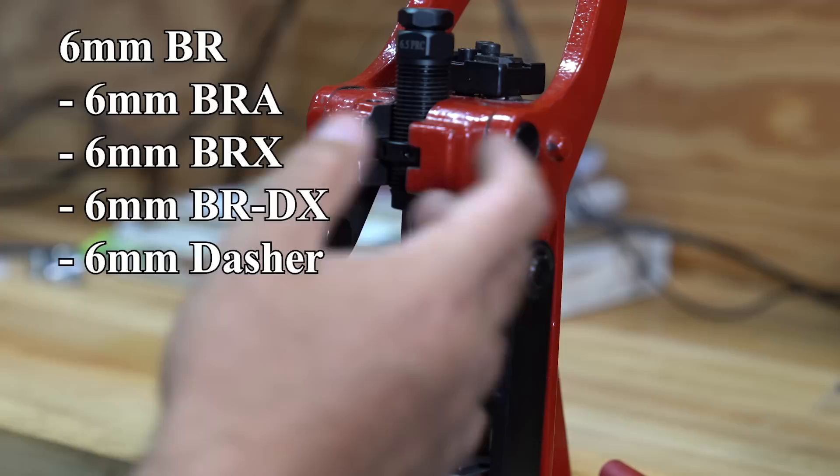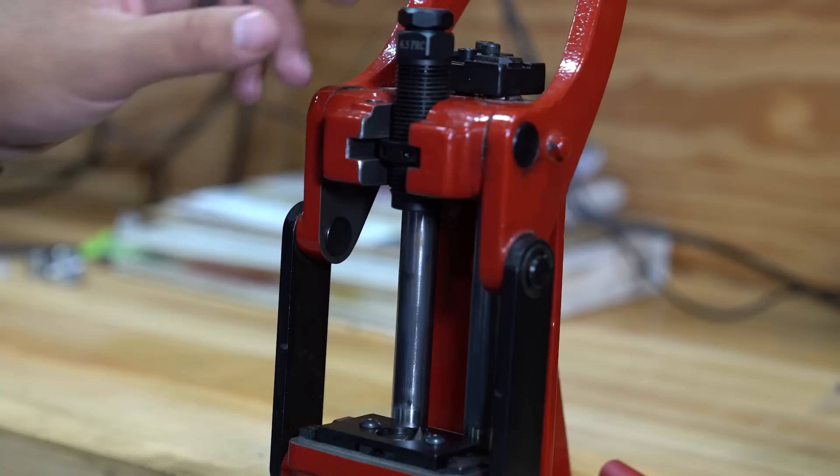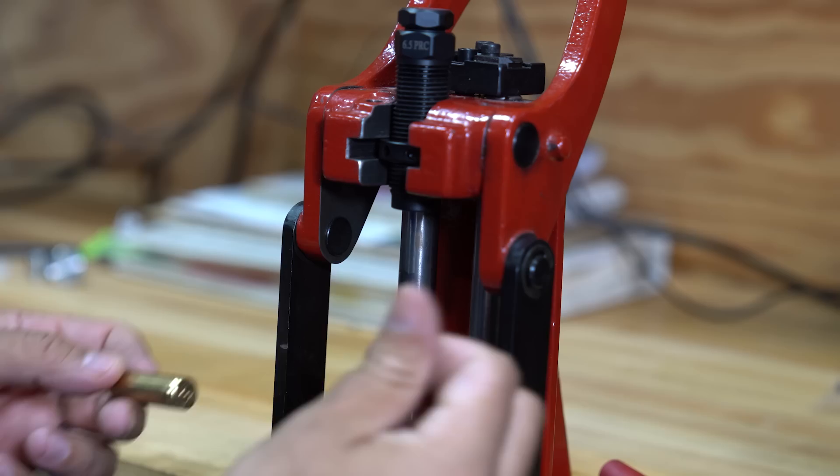So on the 6BR dies, you can use it with the 6BR, BRA, BRX, Dasher, anything derived from the 6BR cartridge, it's going to work. So anyway, I think you get the point, how these work. And again, you just run it like a conventional die.